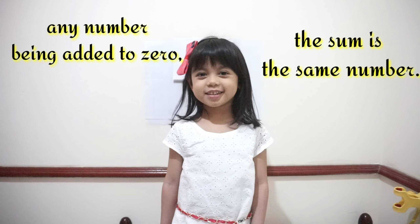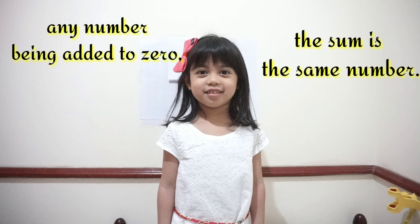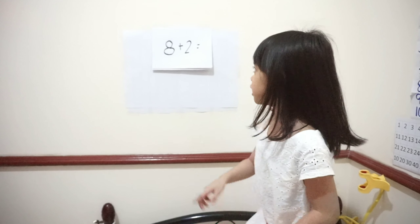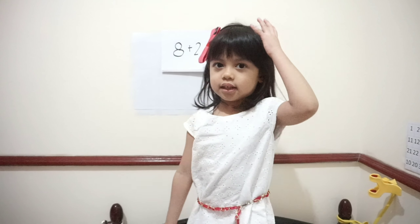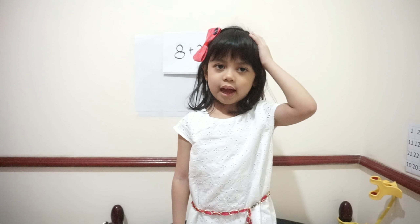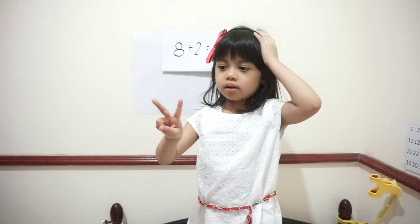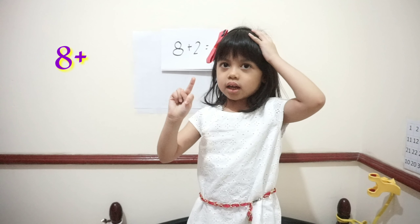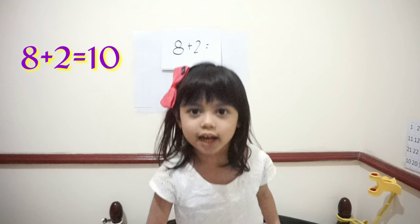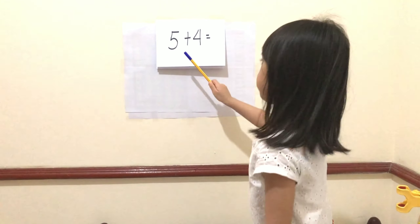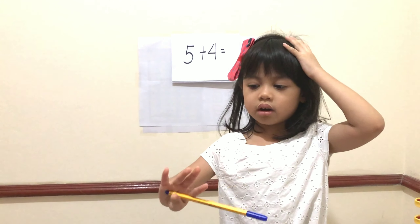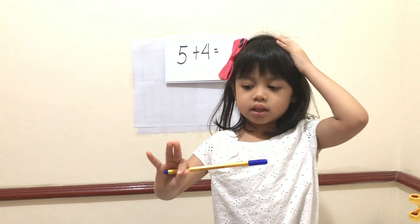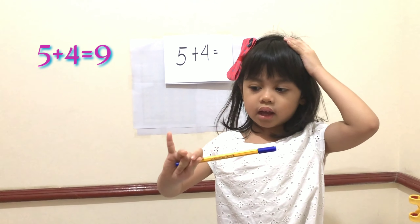It's because 0 means none. High five! 8 plus 2. 8 in the head plus 2. 8, 9, 10. So the answer is 10. 5 plus 4. 5 on the head plus 4. 5, 6, 7, 8, 9.